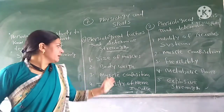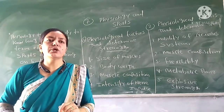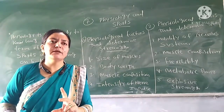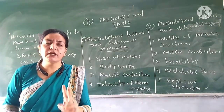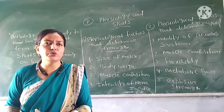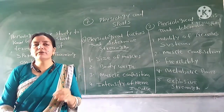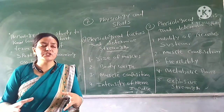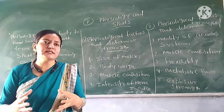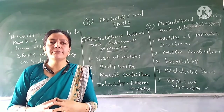The third factor is muscle composition. Muscles have two types of fibers: fast twitch fiber and slow twitch fiber. Fast twitch fibers exert more force, so if a muscle exerts more force, the muscles will be more powerful and have greater strength.